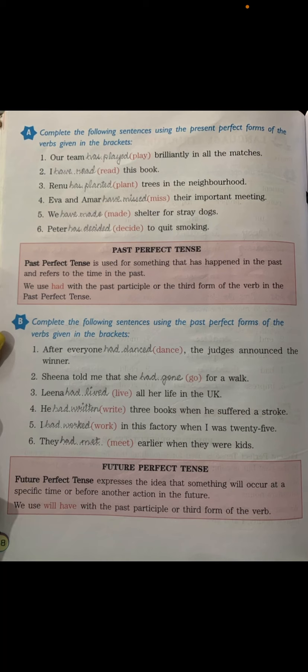Complete the following sentences using the present perfect forms of the verb given in the bracket. 'Our team' — team is a collective noun, treated as singular, so: 'Our team has played brilliantly in all the matches.' Next: 'I' takes 'have' — 'I have read this book.' Note: read is spelled the same in first, second, and third form but pronounced differently — here it's 'red' (third form).